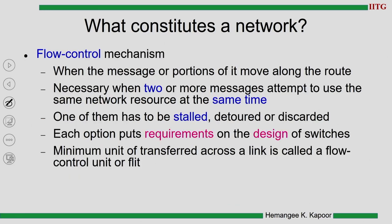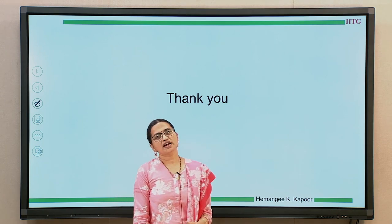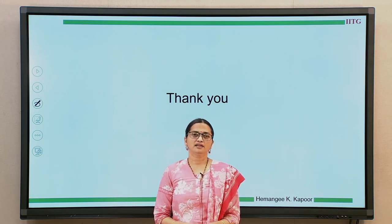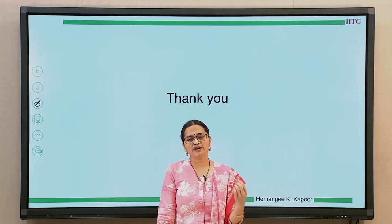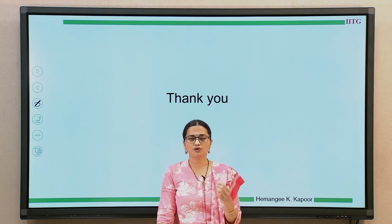Flow control mechanisms handle situations when two or more messages want to use the same network resource at the same time. When this happens, you might want to stall one packet, detour it, or discard it. Whatever decision we take, it affects the design of the switch. These decisions affect the design of the network, and hence we need to decide the flow control mechanism before designing the network. In this lecture, we have looked at the overview of the interconnect — what it is made up of and the different factors needed for good performance.